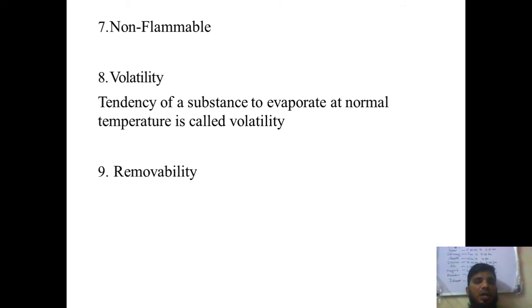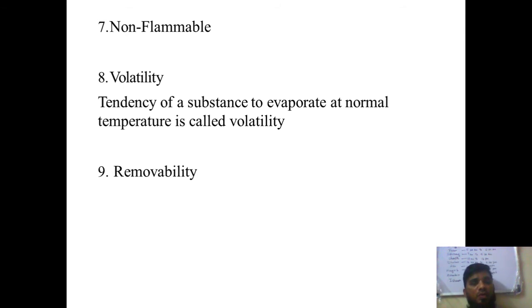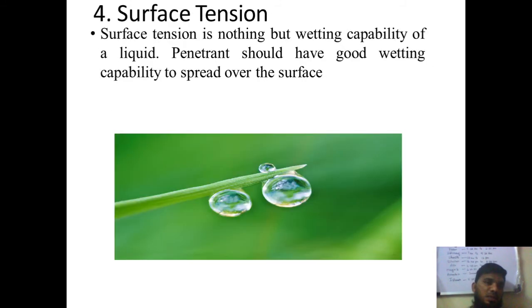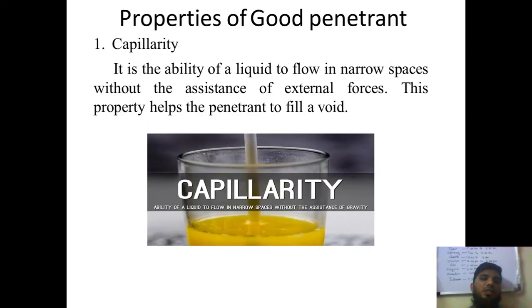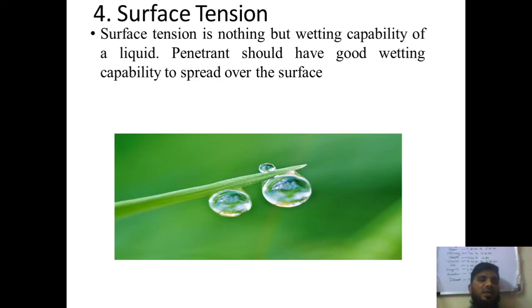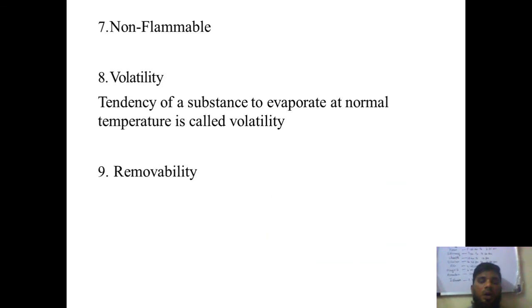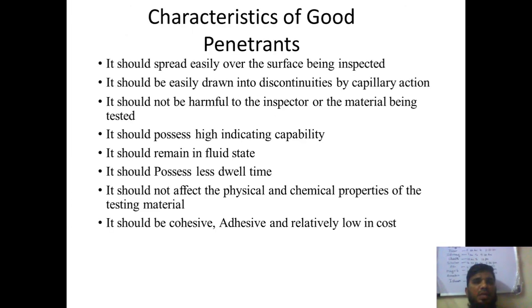Volatility — like petrol or kerosene catching fire on a hot day without any reaction, simply due to elevated temperature. The ninth property is removability — it can be easily removed from the surface of the material. To summarize the properties of a good penetrant: capillarity, contact angle, viscosity, surface tension, cohesive and adhesive forces, specific gravity, non-flammability, volatility, and removability.